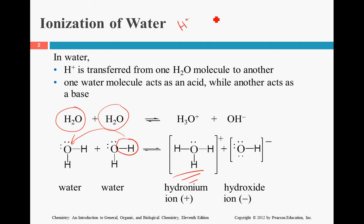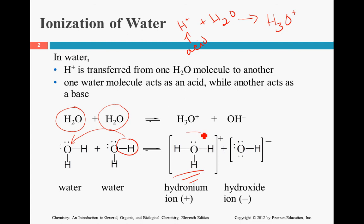H plus attaches to water, so if this is from an acid, like hydrochloric acid, H plus doesn't really float around in water by itself. Instead, it attaches itself to a water molecule to make H3O plus. A hydrogen by itself is too small to exist, so that's why it attaches to something else. On the right-hand side of the equation, we have H3O plus and we have OH minus.